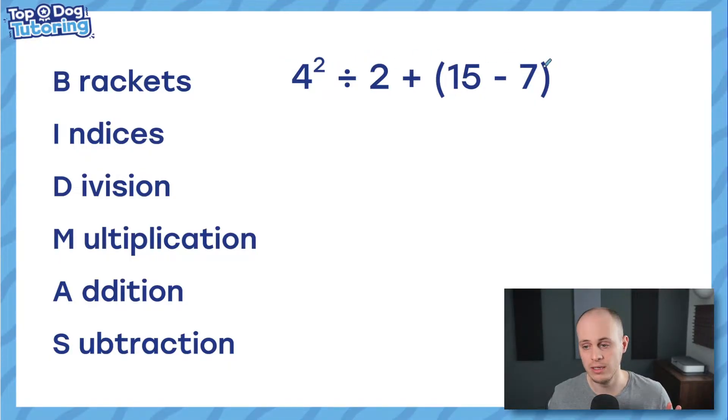Now, if we didn't have an order, a different mathematician could come along and answer this question. Maybe they start with a different operation first. They start with some addition or they start with the division first and get a completely different answer. So, mathematicians need an order so that we always get the same answer to the questions. So, let's whiz through it then.